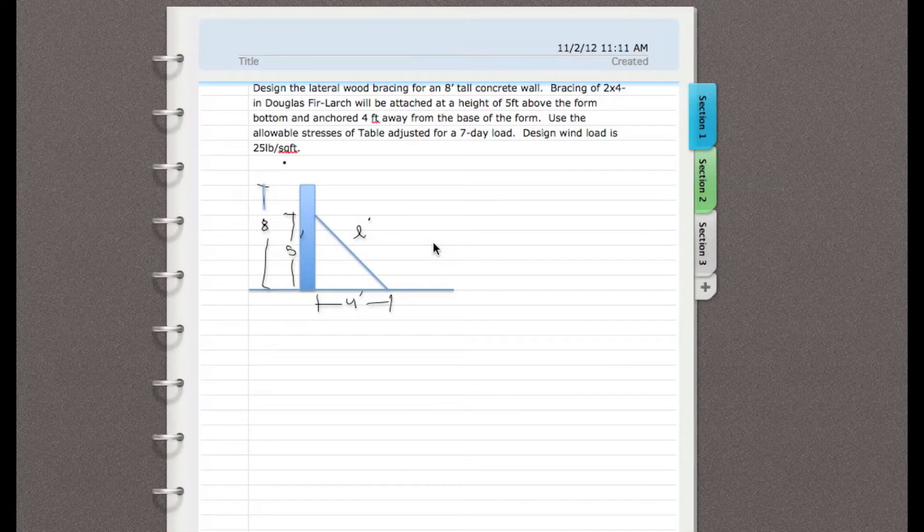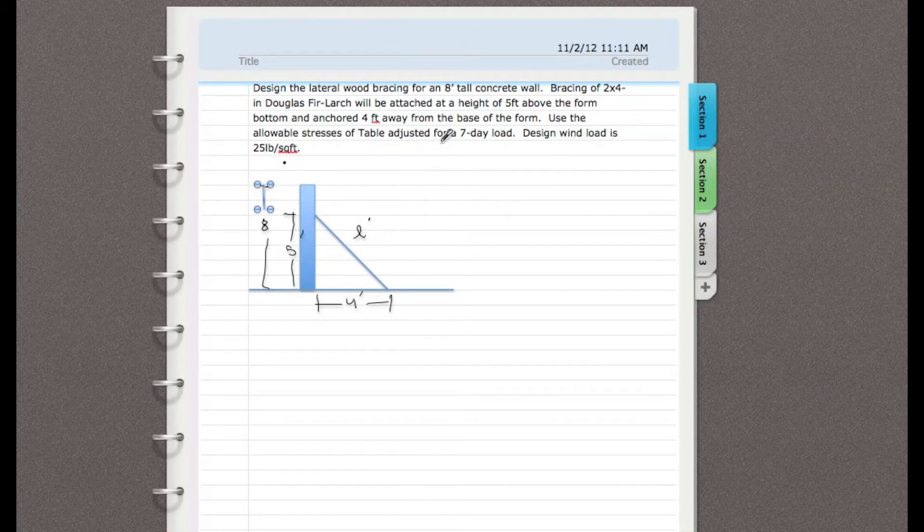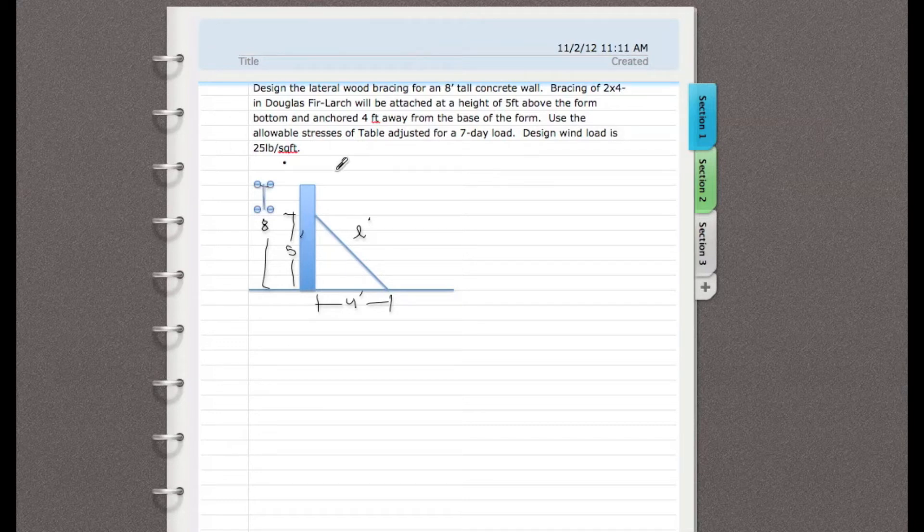Alright, hello everybody. We're going to do an example problem here for lateral wood bracing of a concrete wall form. We're going to go ahead and start by reading off this problem statement. Here is the setup. We're designing the lateral wood bracing for an 8 foot tall concrete wall.